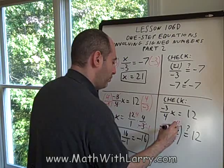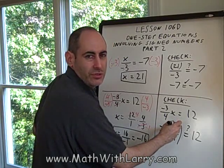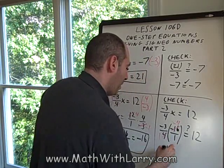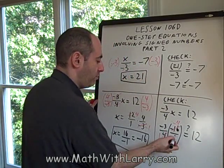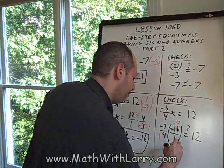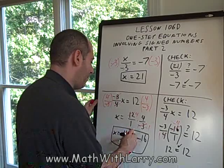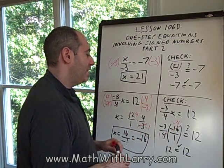Okay, now multiplying across, we have negative 3 times negative 4. A negative times a negative is a positive. That's 12. And then 12, we just have 1 in the denominator. We know we don't have to bother to write that. 12 does equal 12. So that shows that our original answer of x equals negative 16 is correct.